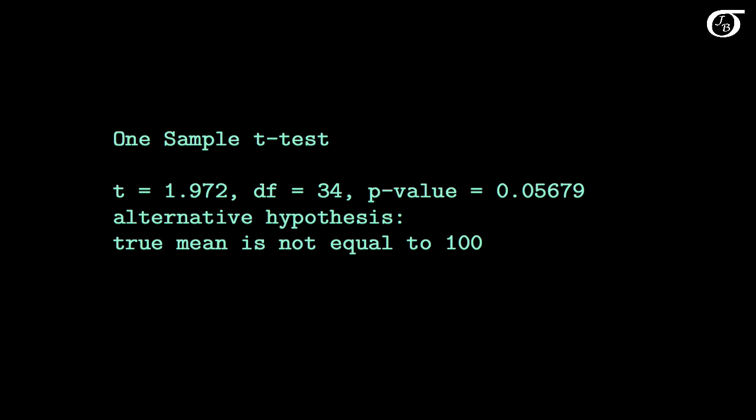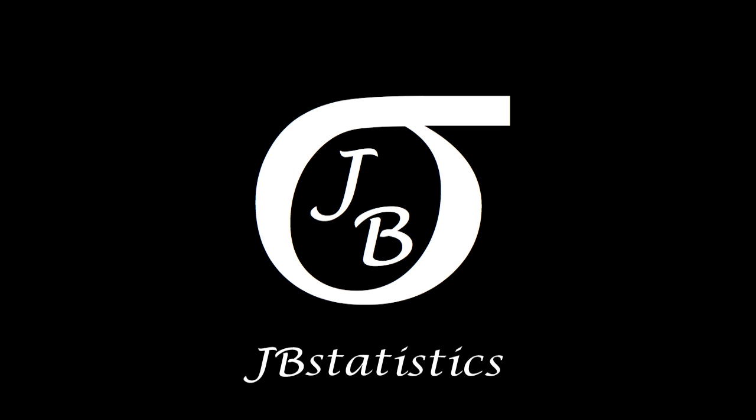On a final note, in practice we carry out the analysis using software, and here's the output for the example. Regardless of whether there are 2 degrees of freedom, 34 degrees of freedom, or a million degrees of freedom, if the test statistic is calculated using the sample standard deviation, the software will find the p-value using the t-distribution with the appropriate degrees of freedom.